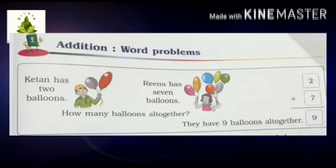So how many balloons do they have all together? Now we will count the balloons all together. Count from Ketan: 1, 2. Now continue counting with Rina's balloons: 3, 4, 5, 6, 7, 8, 9. Nine — 9 balloons all together.